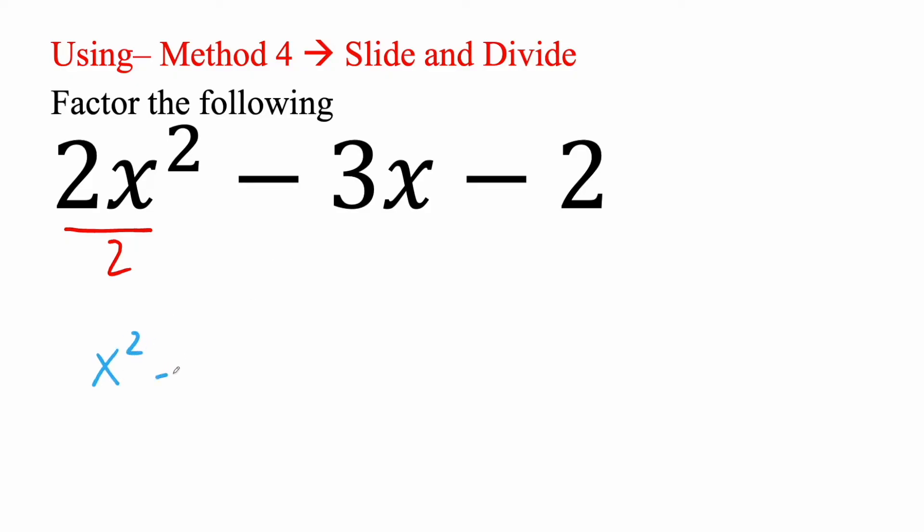Negative 3x remains the same. Now this is called slide and divide. So I'm going to get negative 2 times 2 and get negative 4. Now obviously this and this is not equivalent but we're going to do something at the end to address that.